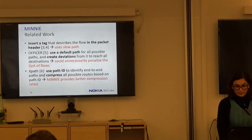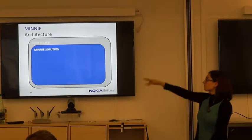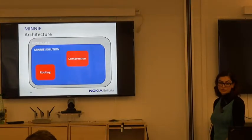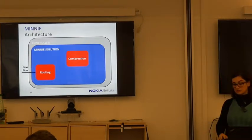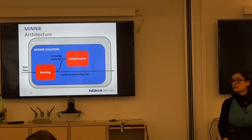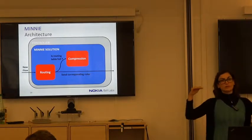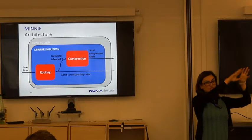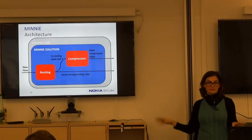Our MINI solution is placed on the controller and is composed of two modules: the routing module and the compression module. When a new flow arrives, the routing module sends the required routing rules and checks if a threshold or full table limit has been reached. If the table limit is reached, the compression module compresses the routing rules on the controller, then sends the compressed table to replace the existing routing table on the SDN switch.